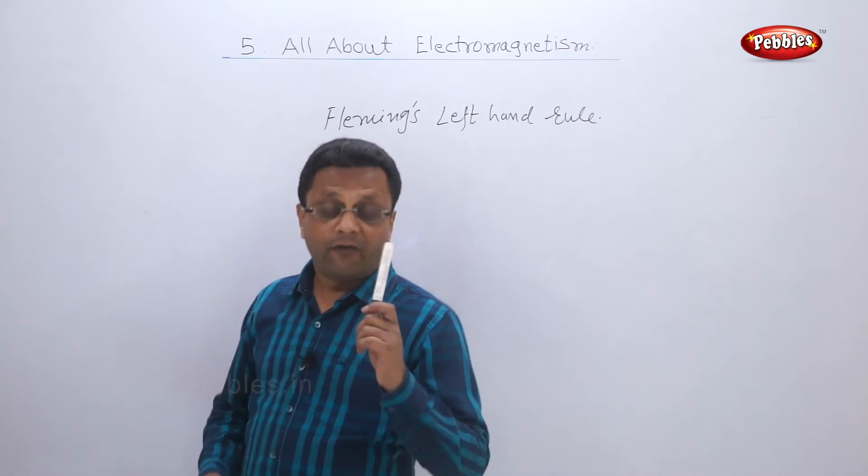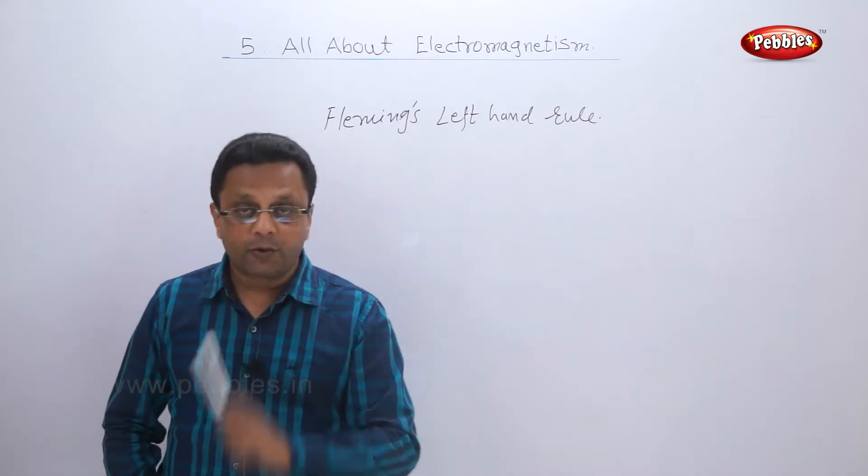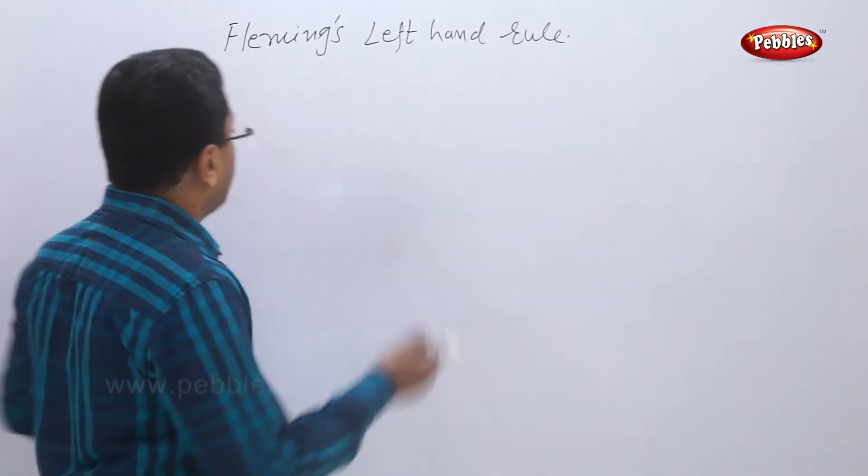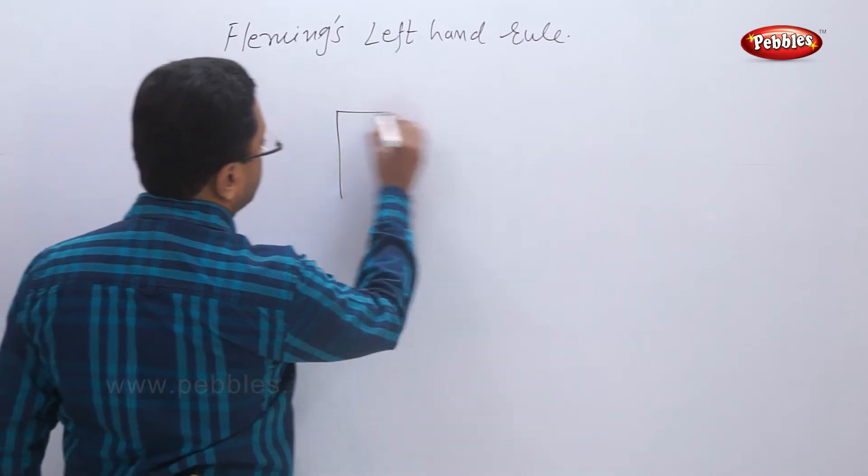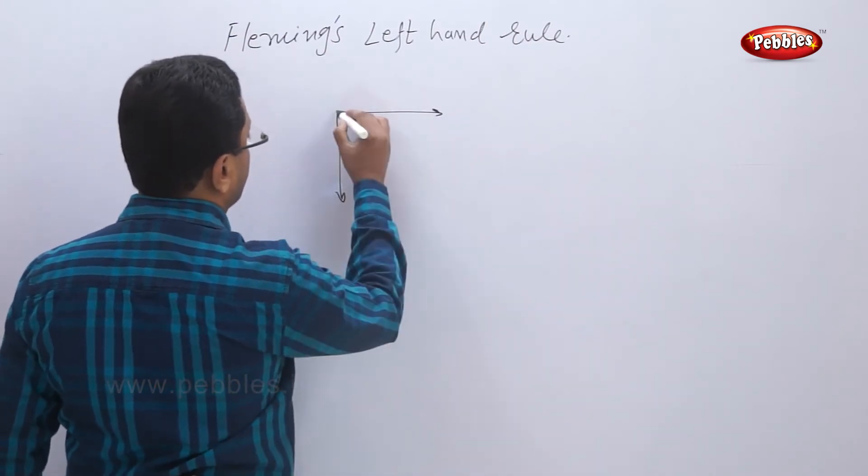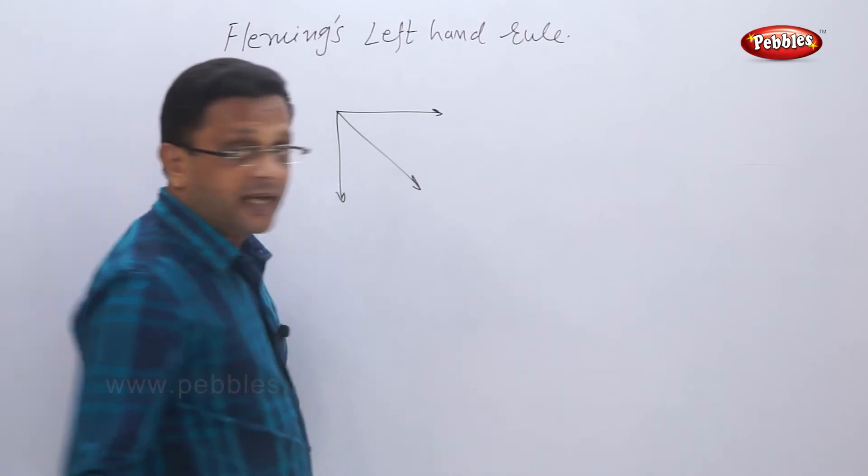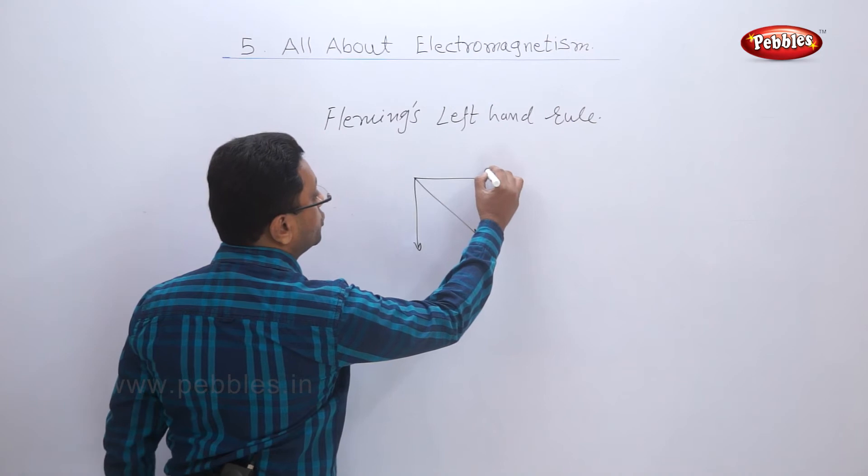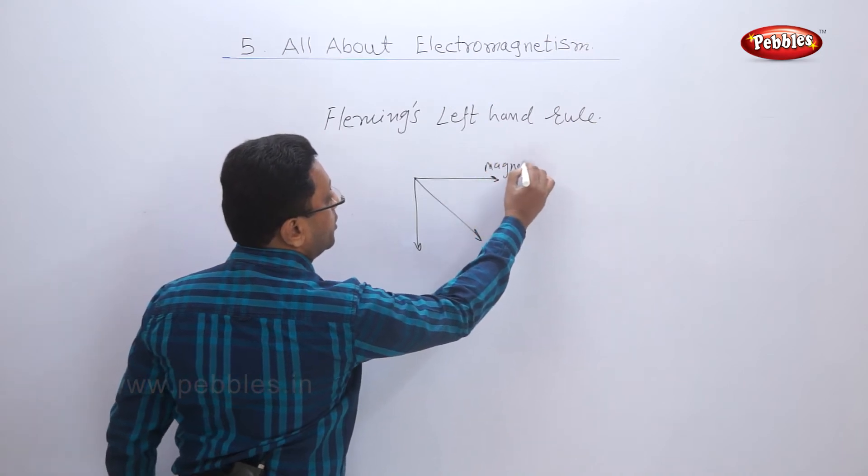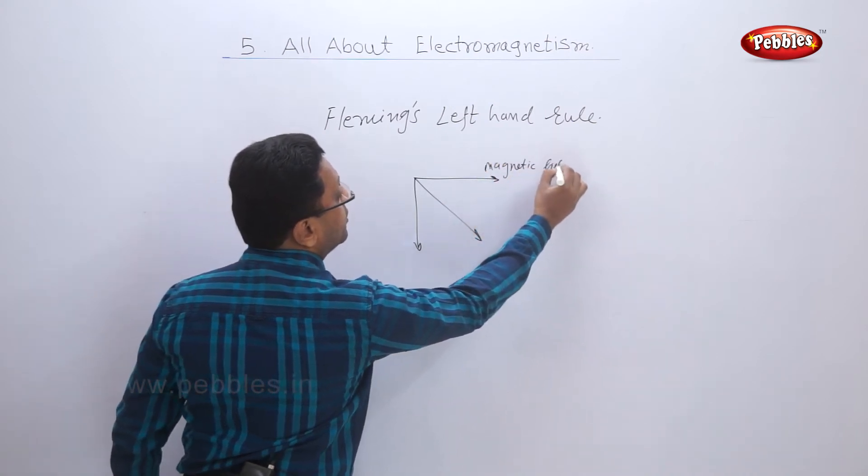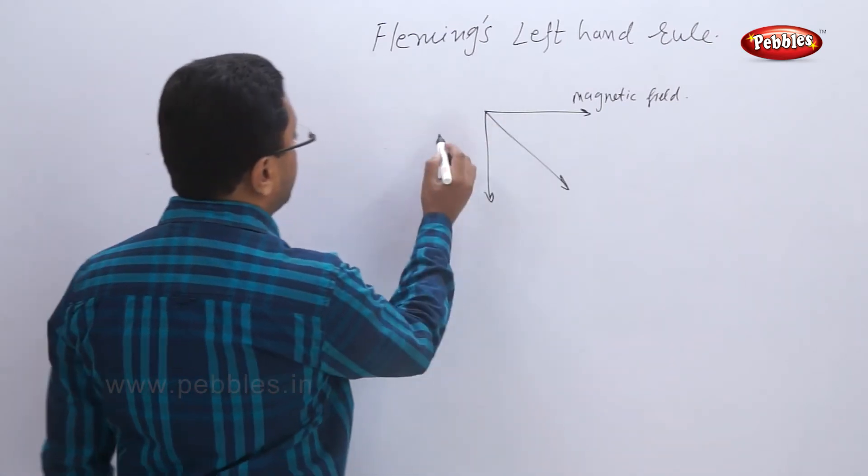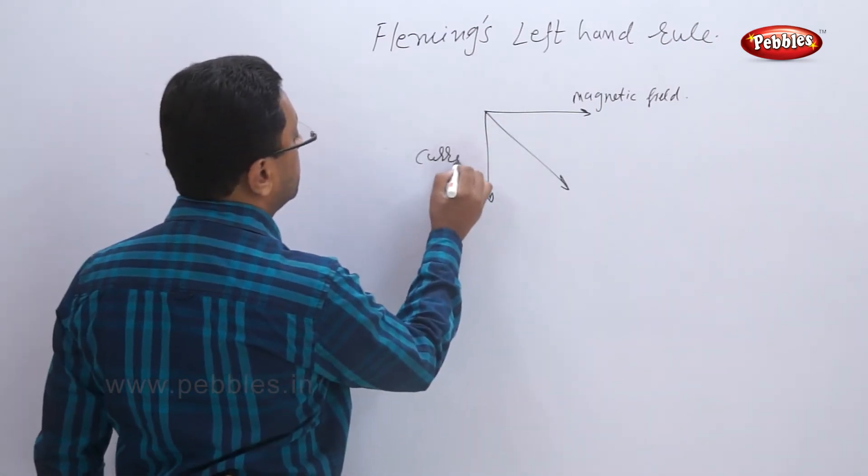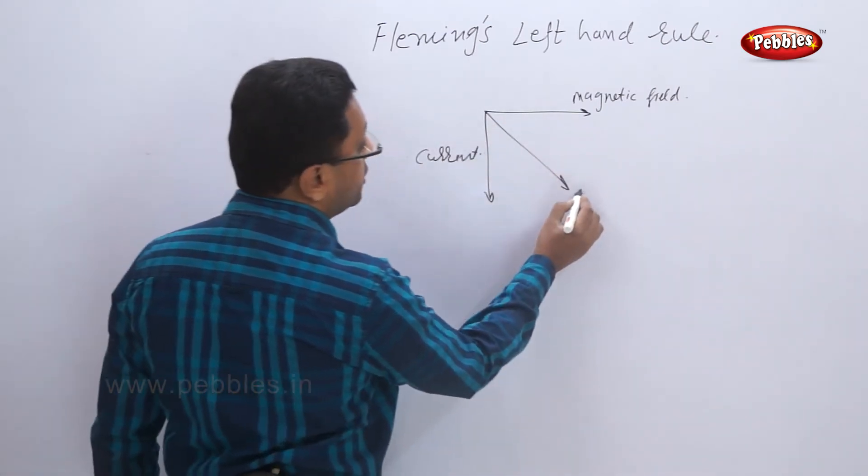By diagram, we can show that this is the Z axis. If my forefinger shows the magnetic field and this is the direction of current, then this is the direction of motion.